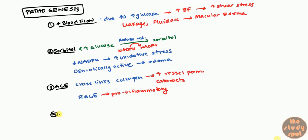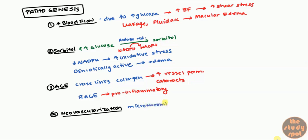Finally, neovascularization is the later stage of diabetic retinopathy. What creates this neovascularization? You get hypoxia — this can be due to microthrombi that develop or any of the fluid losses mentioned earlier. When these thrombi develop, they lead to hypoxia of certain tissues. When these tissues become hypoxic, they begin to release vascular endothelial growth factor (VEGF) as well as other growth factors, and then you get new vessel formation.